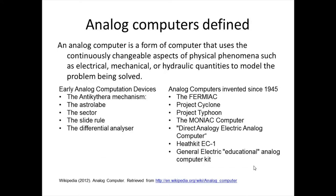The following is quoted from the Analog Computer article found on Wikipedia. An analog computer is a form of computer that uses the continuously changeable aspects of physical phenomena such as electrical, mechanical, or hydraulic quantities to model the problem being solved. In contrast, digital computers represent varying quantities symbolically as their numeric values change. Mechanical analog computers were very important in gunfire control in World War II, the Korean War, and the Vietnam War, and were made in significant numbers.